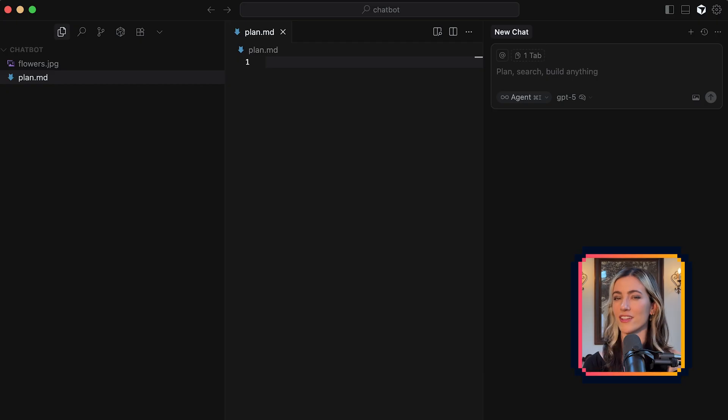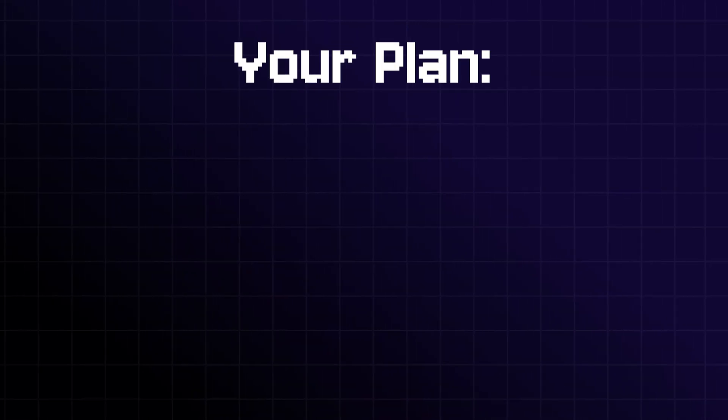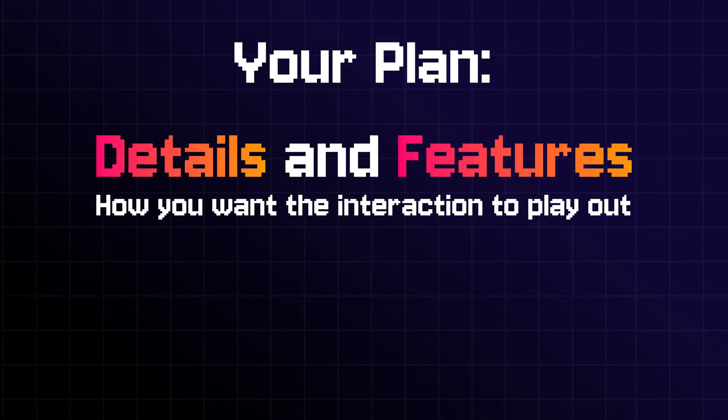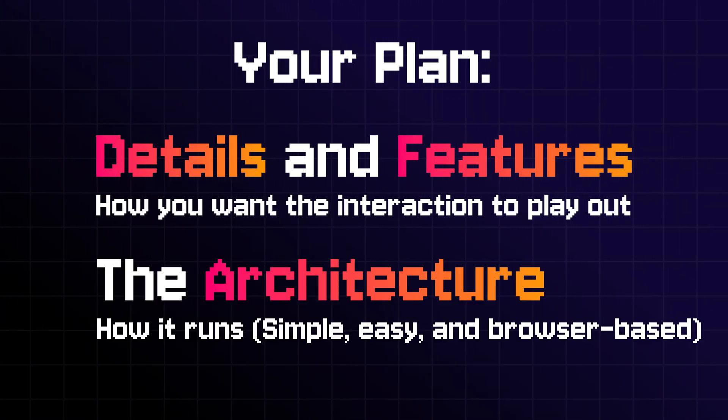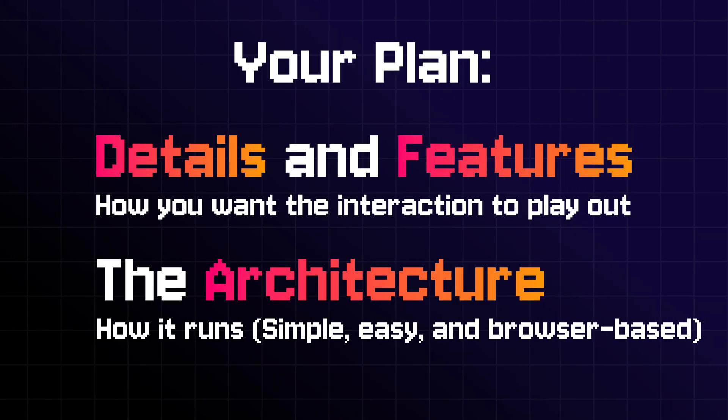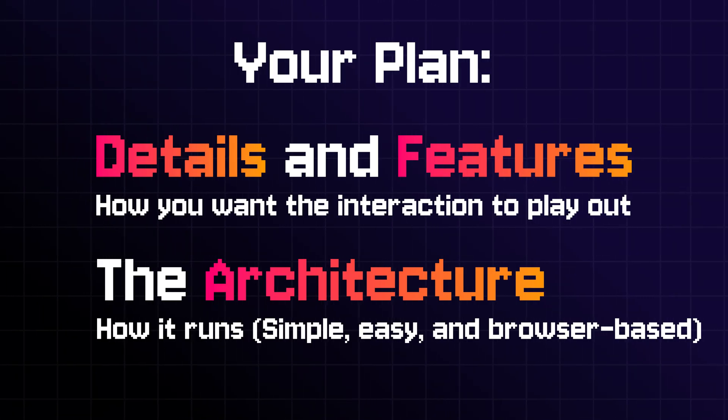This file will hold every detail and feature of what you want to create. The better your plan, the better your results. Having a clear, detailed plan makes it easier for your AI agent to get things right the first time. This way, you can spend a lot of energy up front instead of fixing things that don't work later. You want to hit a couple of key things: all the details and features, how you want that interaction to play out, and any cues about the architecture — in this case, simple, easy, browser-based.